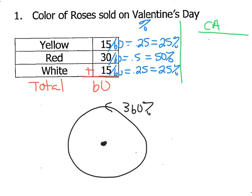For yellow roses, 25% of the roses sold were yellow, so I want 25% of my circle to be yellow. I'm going to do 25%, which is 0.25, times 360. So 0.25 times 360 gives me 90 degrees — that first category needs to be a 90-degree angle. For red, 50% of the circle needs to be red, so 0.5 times 360 gives me 180 degrees for that angle.